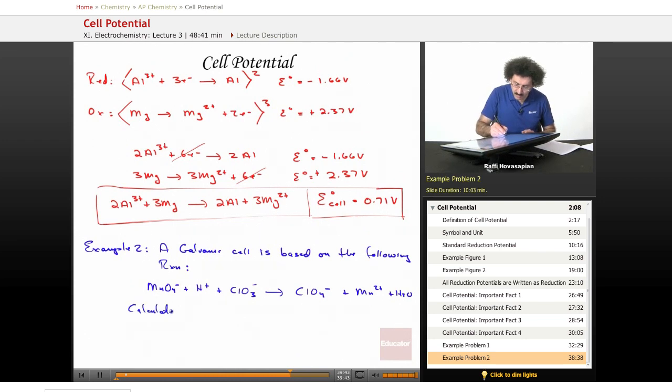Our problem is to calculate the standard cell potential for this reaction. Let's take a look at what we have. This is balanced as written. We can double check that, but it is balanced because you see the H plus, you see the H2O. Everything looks like it's done.